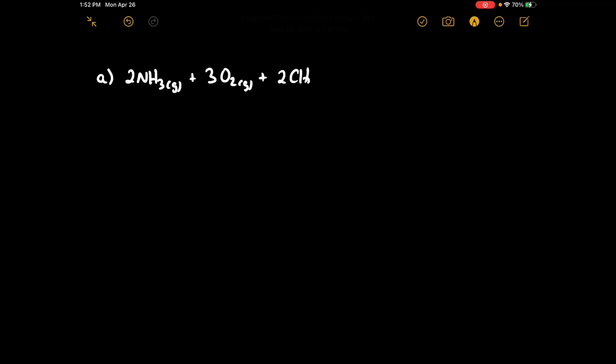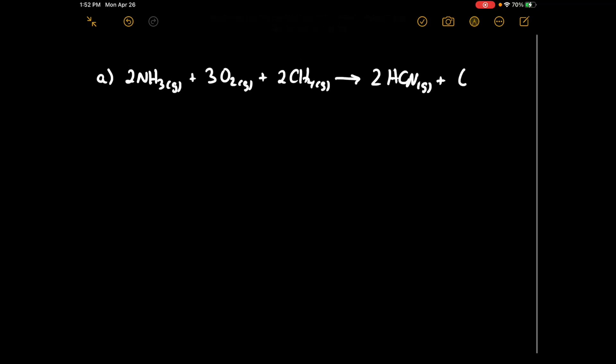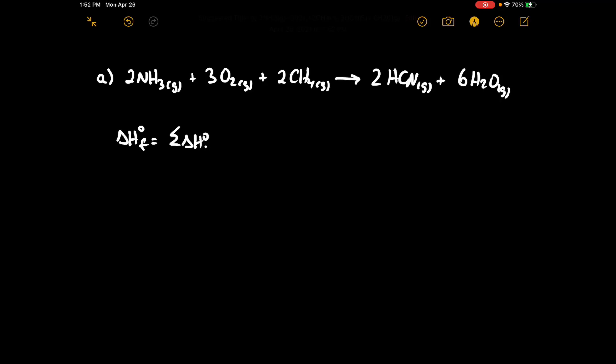Let's use the values in Appendix 4 to calculate the enthalpy of formation for each of the following reactions. The reaction in Part A is 2 NH₃ gas plus 3 O₂ gas plus 2 CH₄ gas producing 2 HCN gas and 6 H₂O gas. When we calculate the enthalpy of formation, this is equal to the sum of the enthalpy of formation of the products minus the sum of the enthalpy of formation of the reactants.